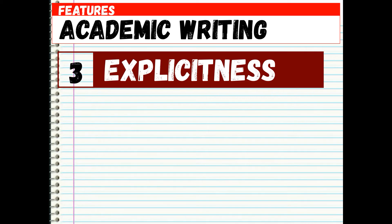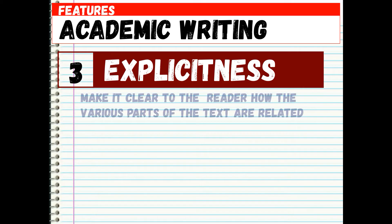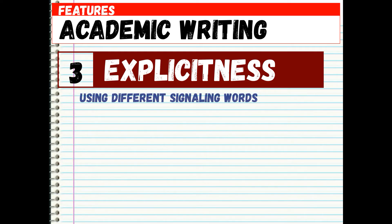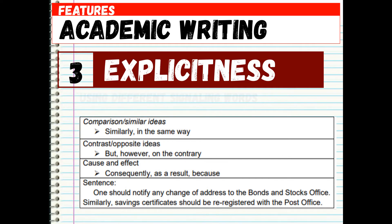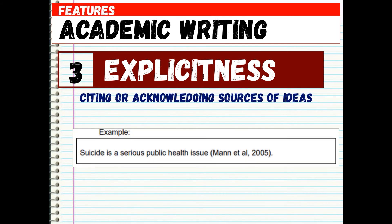Three: explicitness. Explicitness is the responsibility of the writer in English to make it clear to the reader how the various parts of the text are related. It is achieved through using different signaling words — for comparison or similar ideas: 'similarly,' 'in the same way'; for contrast: 'but,' 'however,' 'on the contrary'; for cause and effect: 'consequently,' 'as a result,' 'because.' The sample sentence is: 'One should notify any change of address to the bonds and stocks office; similarly, savings certificates should be re-registered with the post office.' Explicitness also involves citing and acknowledging sources of ideas — for example: 'Suicide is a serious public health issue (Mann et al., 2005).'